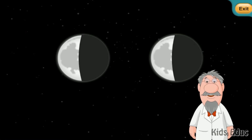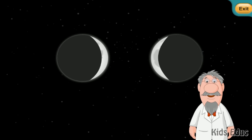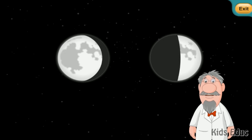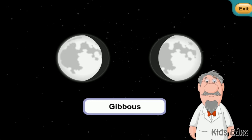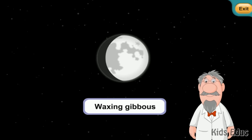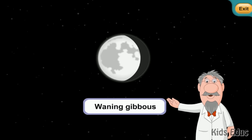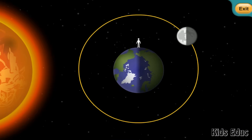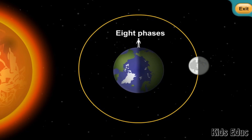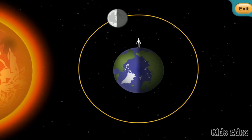When less than half of the moon is lit by the sun, it is called a crescent. When more than half of the moon is lit by the sun, it is called a gibbous. Waxing gibbous indicates the part of the moon that is lit and growing, whereas waning gibbous is the part of the moon that is lit and shrinking. Based on what we just learned, let's look at the different phases of the moon. There are eight phases in all. We'll now explore each phase of the moon.